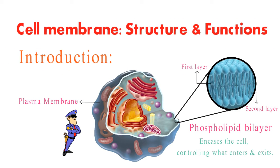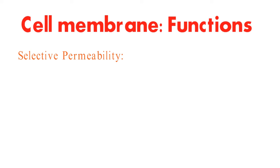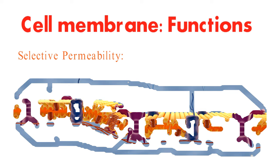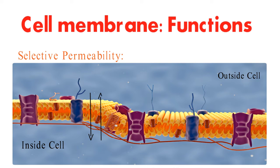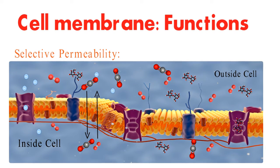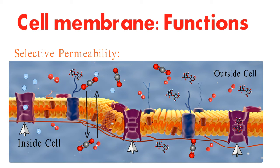One of the membrane's key functions is selective permeability. This means it allows certain molecules to pass through while keeping others out. Small nonpolar molecules, like oxygen and carbon dioxide, can slip through the lipid bilayer. But larger molecules, ions, and polar molecules need help from specialized transport proteins.